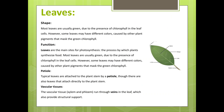You can observe here the structure of a leaf: midrib, margin, veins, petiole, leaf margin, leaf lamina, and leaf tip. Typically, leaves are attached to the plant stem by a petiole, though there are also leaves that attach directly to the plant stem. Vascular tissues — for example xylem and phloem — run through veins in the leaf, which also provide structural support.